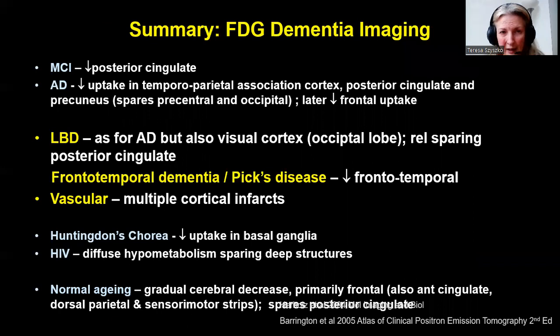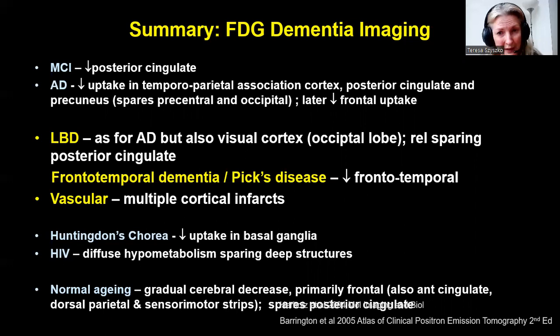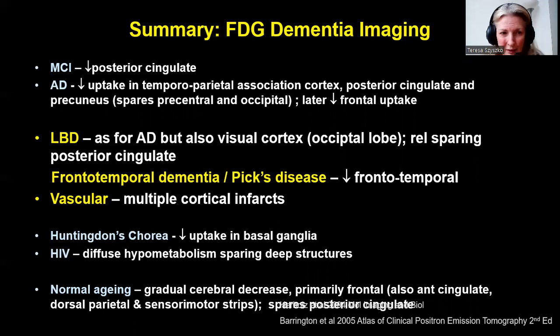In summary, for the big three: Lewy body dementia looks a bit like Alzheimer's but also extends to the occipital lobe with relative sparing of the posterior cingulate. Frontotemporal dementia involves the anterior frontal lobes and anterior temporal lobes — remember Pick's disease and the various temporal subtypes. Vascular dementia can be multiple or single cortical infarcts. And then there are all the rarer conditions — hopefully you won't see them very often, but it's important to be aware of them.